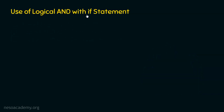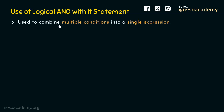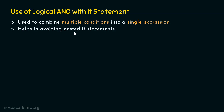What is the use of logical AND with if statement? We already know what logical AND is, as we have learned it in our previous presentations. We also know what an if statement is. Logical AND is used to combine multiple conditions into a single expression. We can use nested if structure, but if we want to combine multiple conditions into a single expression, we can use logical AND with if statement. This allows us to combine multiple conditions and helps in avoiding nested if statements.